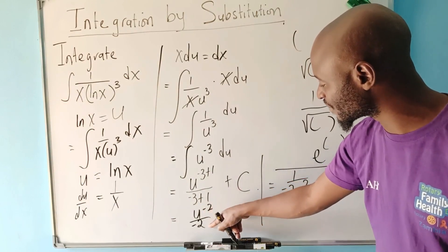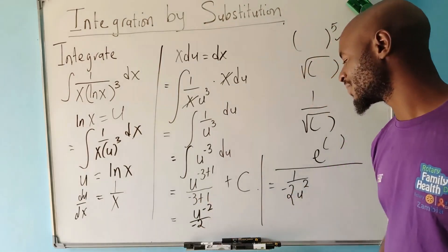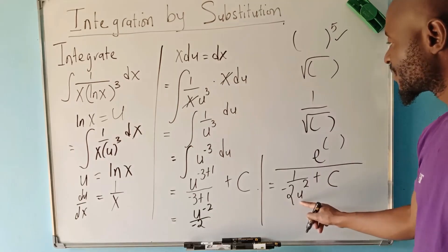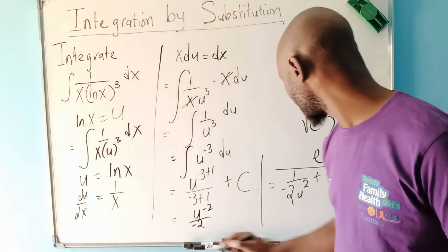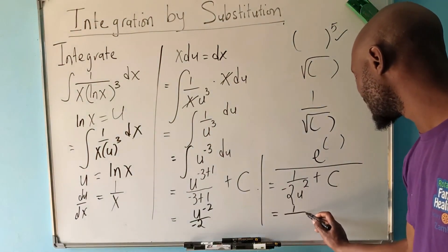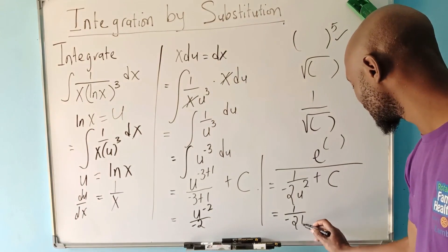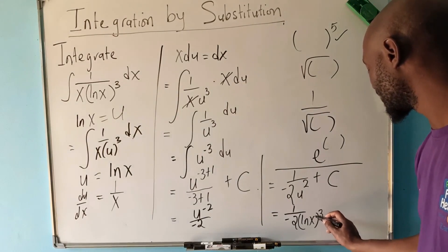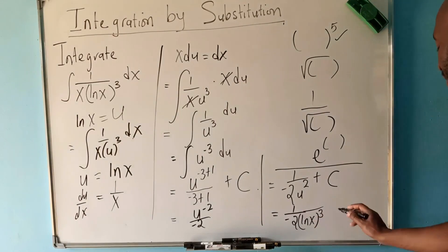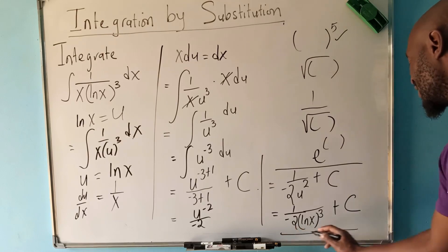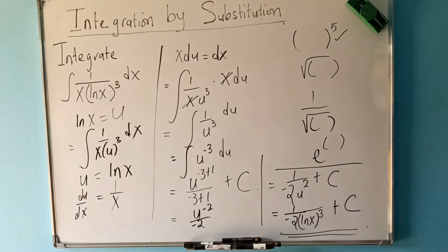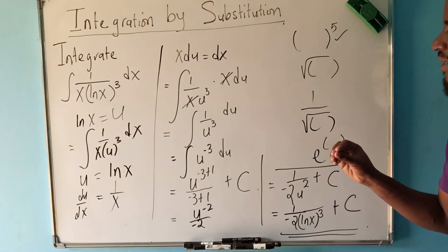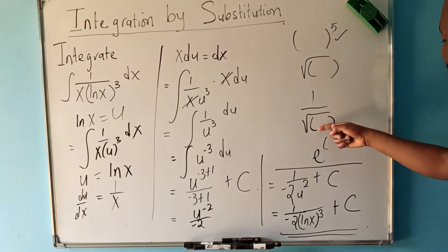When you push the power back down to the denominator, the sign changes from negative to positive. We know the value of u, so we can substitute back: our u was equal to ln(x). So the final answer becomes one over negative two times (ln x) cubed, plus c. This is our integration of the given expression using u-substitution.